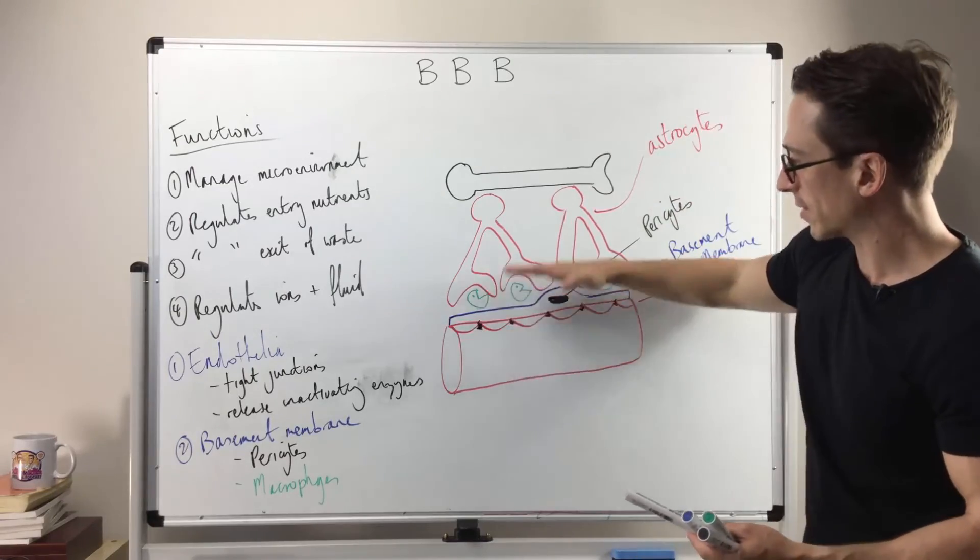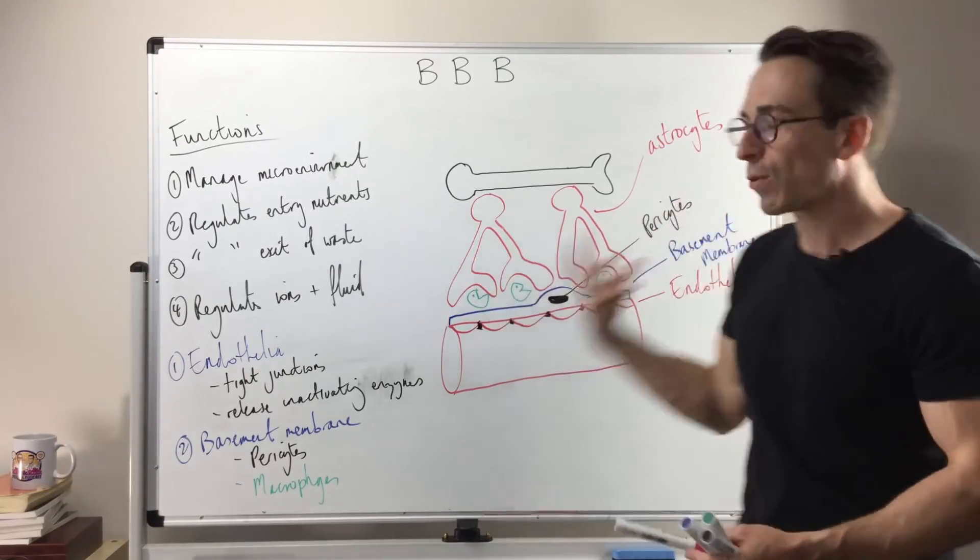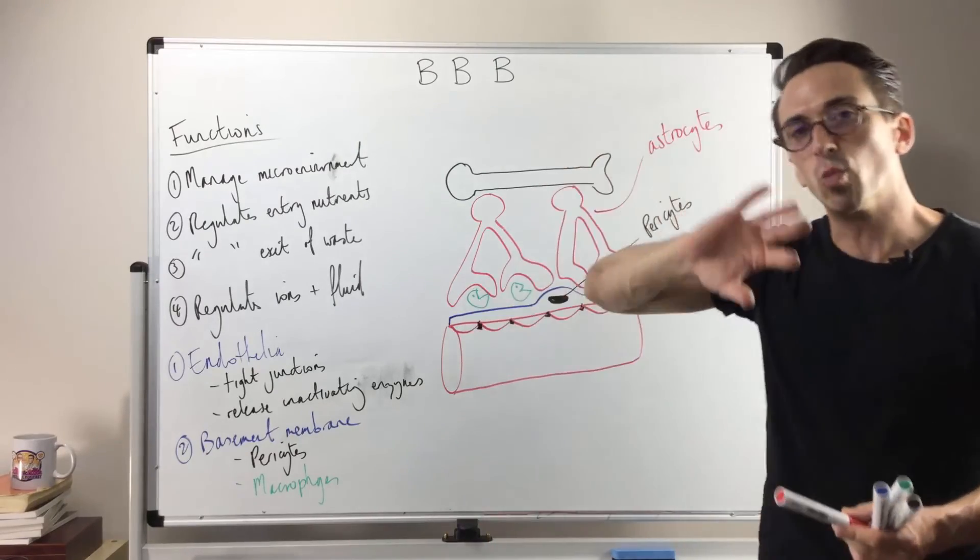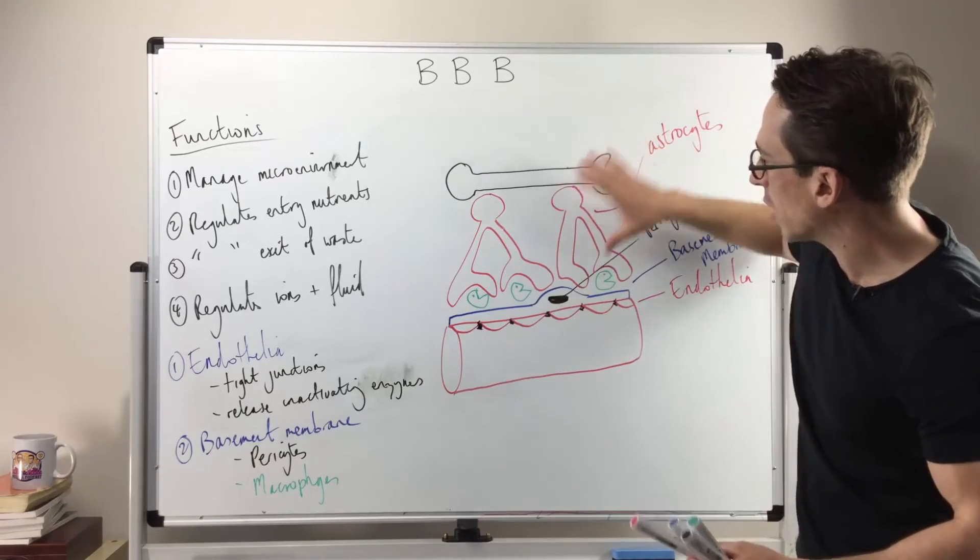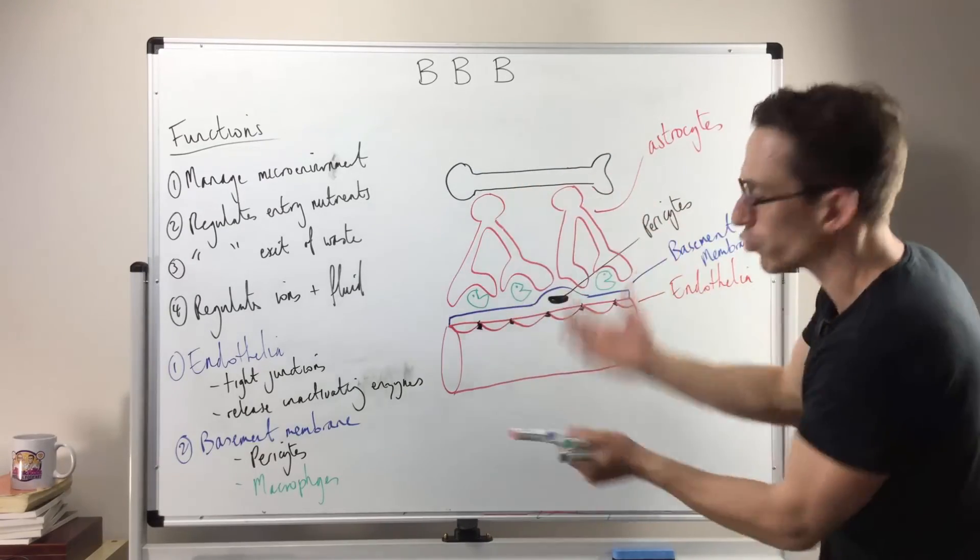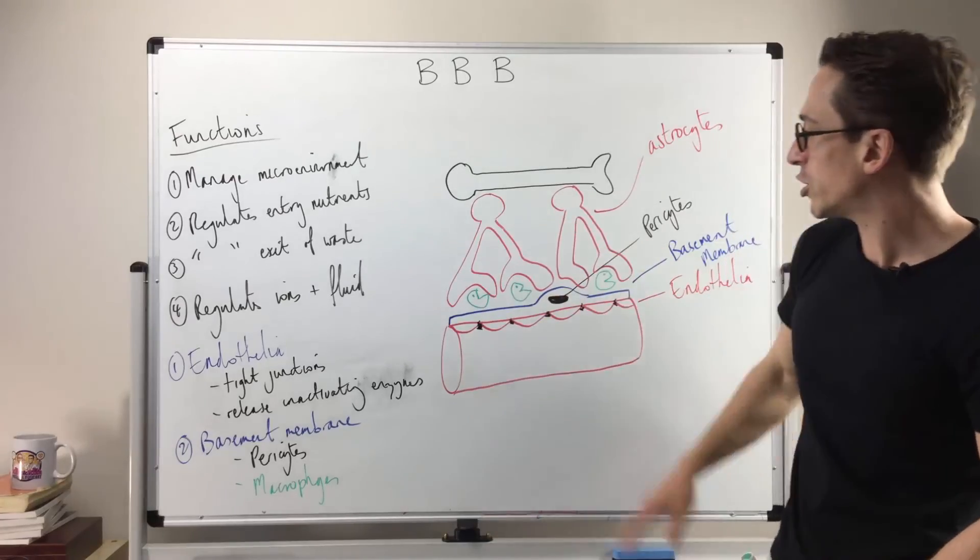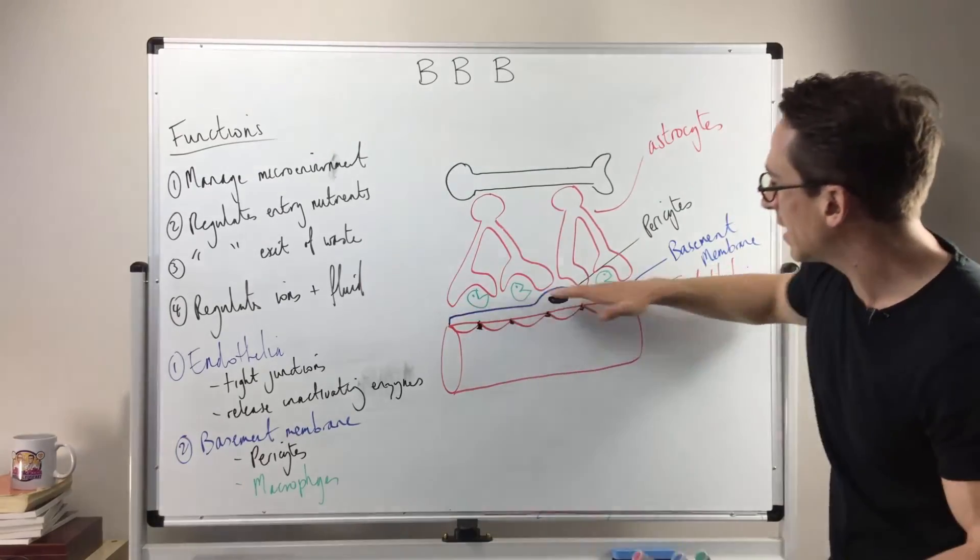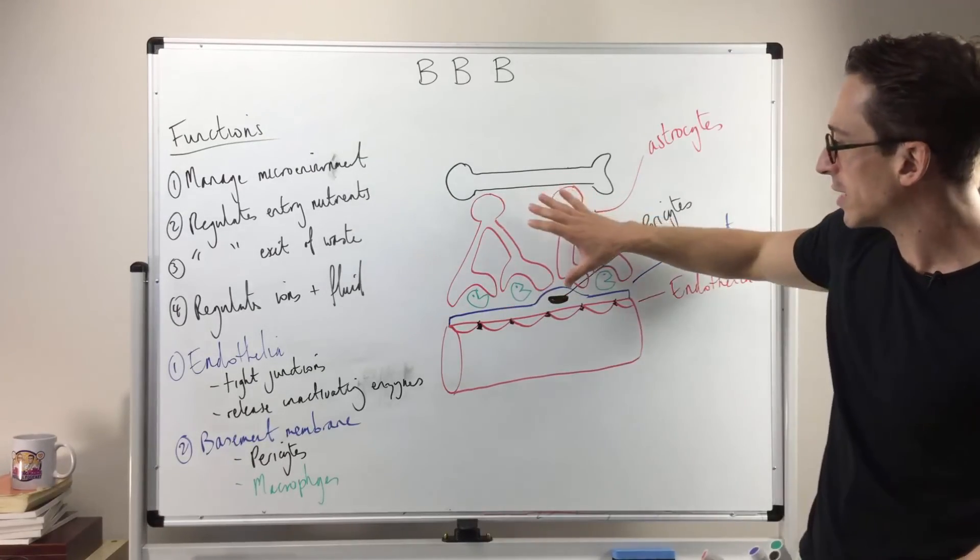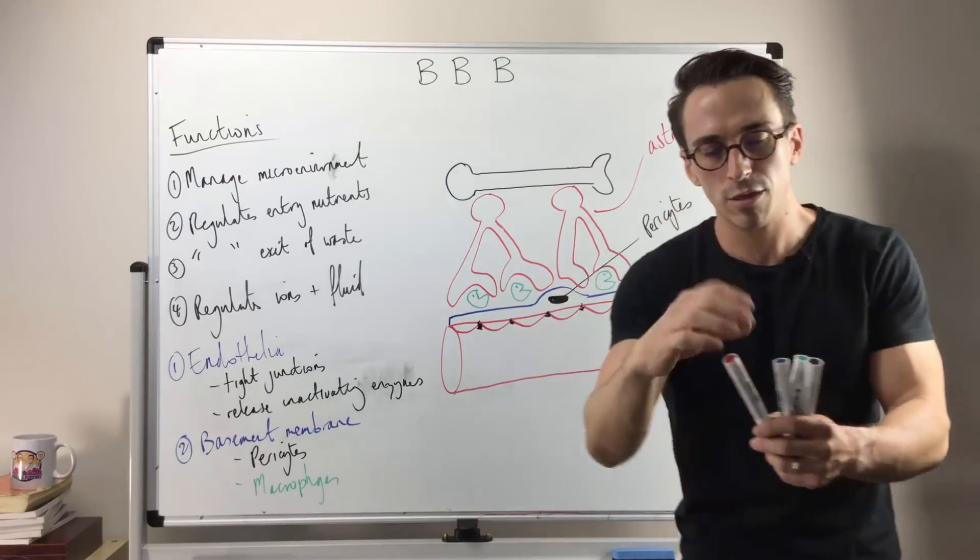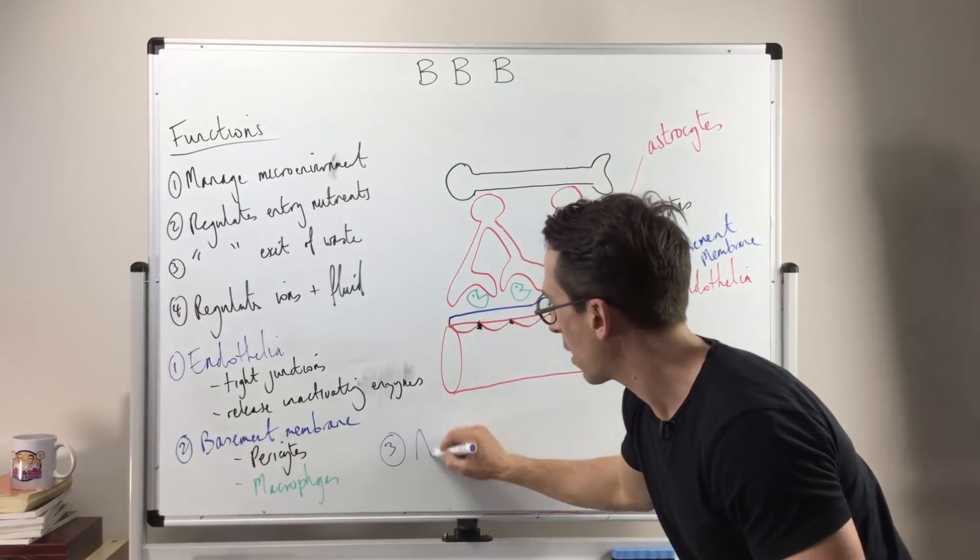So these end feet play a really important role in ion and water or fluid management, but they also play a role because they are like the gatekeepers for the whole structure. They control what's happening at the endothelia, at the tight junctions, with the pericytes, at the connective tissue of the basement membrane, and with the macrophages. The astrocytes are the overall boss of the whole system and they are the third and final layer of the blood-brain barrier.